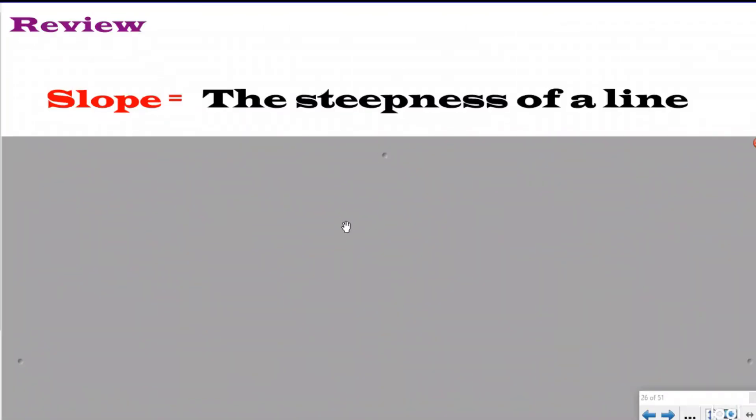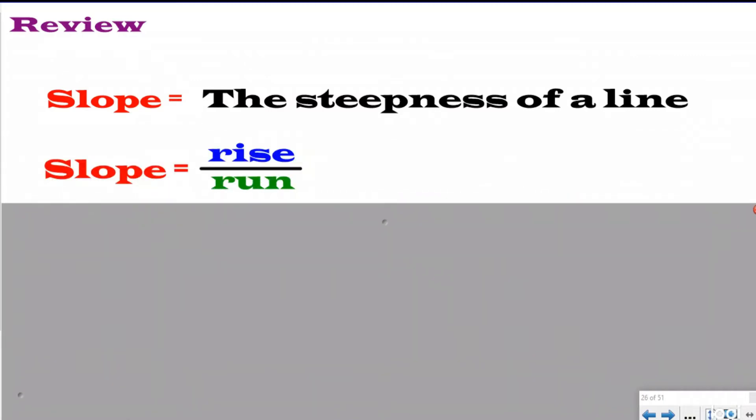Alright, to review before we get off the ski lift and try to get down that mountain, the slope is the steepness of a line. These are all things we've learned from previous videos. We learned that the slope is the ratio of the rise to the run for every change in y. So up or down, how many are we going over on our x-axis? How many are we running to the left or to the right on our x-axis?